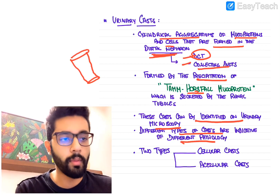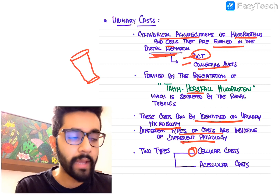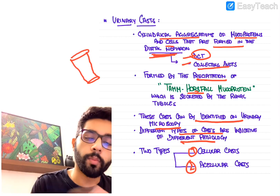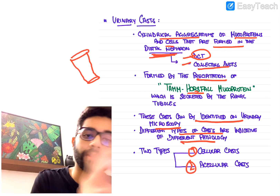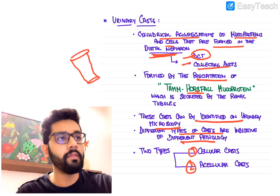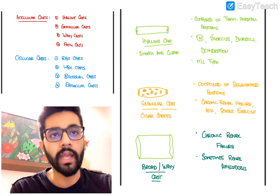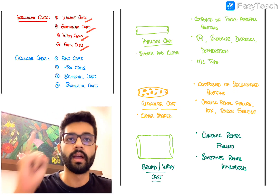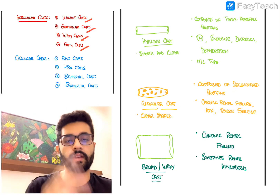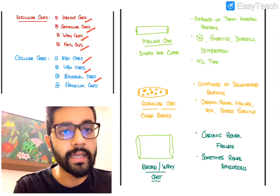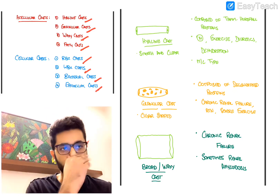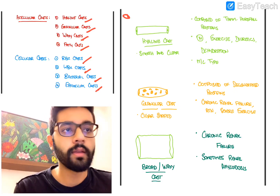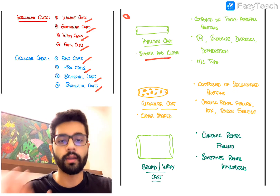There are two types of urinary casts: cellular casts, which have cells embedded in the mucoprotein cylinder, and acellular casts, which have no cells. Important acellular casts include hyaline cast, granular cast, waxy cast, and fatty cast. Cellular casts include RBC cast, WBC cast, bacterial casts seen in infections, and epithelial casts.